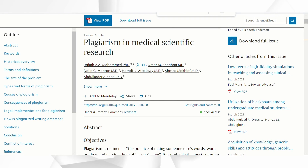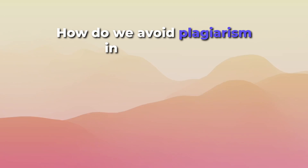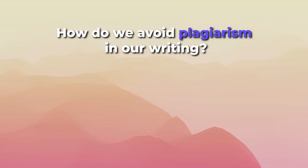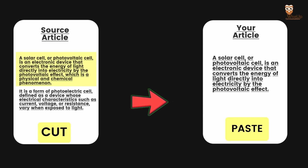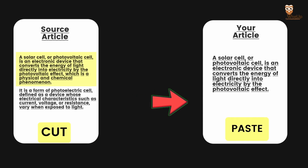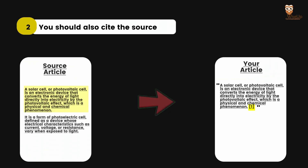Universities too have very strict guidelines against it. So how do we avoid plagiarism in our writing? There are three ways to do that. First is quoting, where you take the information word by word from another article, put it under quotation marks, and then cite the source.